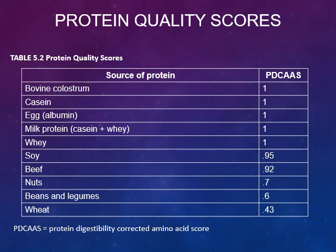Casein, which is from milk, is a slowly absorbed protein. Egg is one of the highest quality proteins you can consume and is also a very cheap source of protein. Milk proteins contain casein and whey — whey is absorbed more quickly than casein, and whey has a PDCAAS score of one. There are some high-quality vegetable source proteins like soy, which has a score of 0.95. Nuts tend to have a protein digestibility score around 0.7, and beans and legumes a little lower at 0.6.